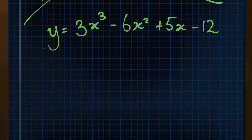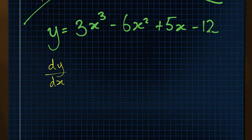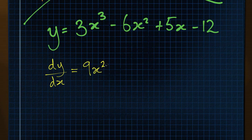The actual process is not very complicated and becomes second nature once you've practiced it a bit. We start with a function y equals 3x cubed minus 6x squared plus 5x minus 12, and we differentiate that function to find dy by dx, which is also known as the gradient function. We do this by multiplying the index number of each term by the coefficient and then reducing the index number by 1. So this first term is 3 times 3, giving 9x, and then reducing the power by 1, that's 9x squared.